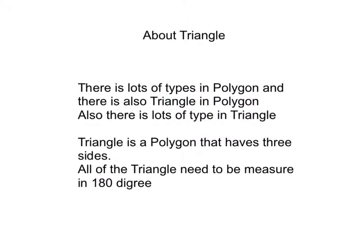About triangle: there are lots of types in polygon, and there is also triangle in polygon. Also, there are lots of types in triangle. Triangle is a polygon that has three sides. All of the triangles need to be measured in 180 degrees.